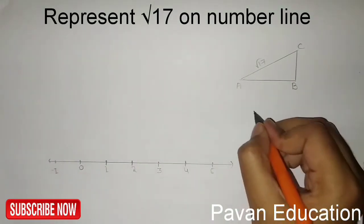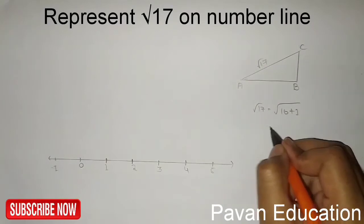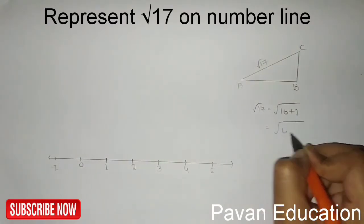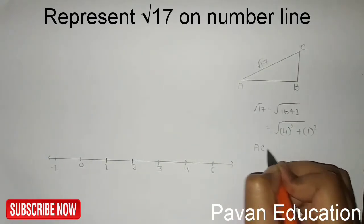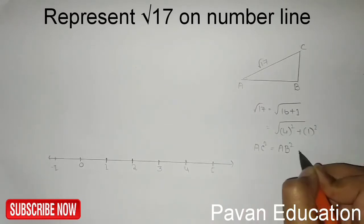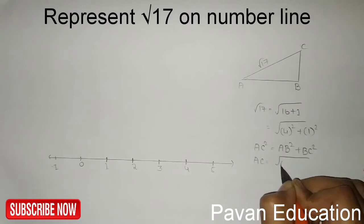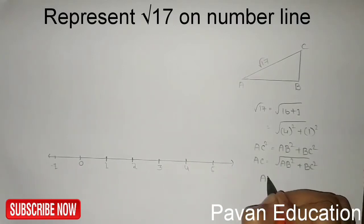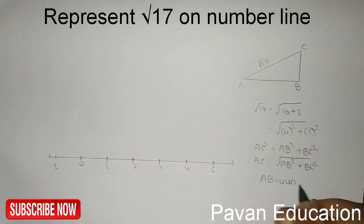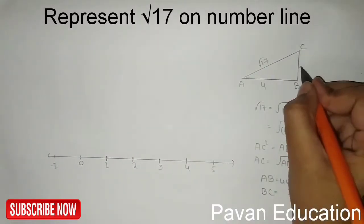So how can we get root 17? We can write root 17 as root of 16 plus 1, which equals root of 4 squared plus 1 squared. According to the Pythagorean theorem, AC squared equals AB squared plus BC squared, so AC equals root of AB squared plus BC squared. Substituting, we get AB equals 4 units and BC equals 1 unit.